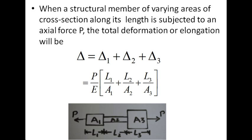When any structural member has a varying cross-section area along its length and is also subjected to an axial force, the total deformation will be equivalent to the sum of the deformations of the individual sections under the action of the axial force.